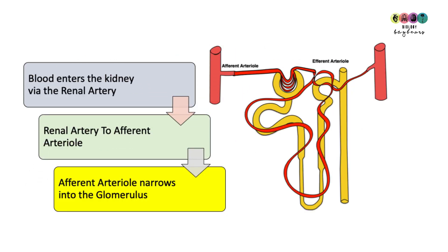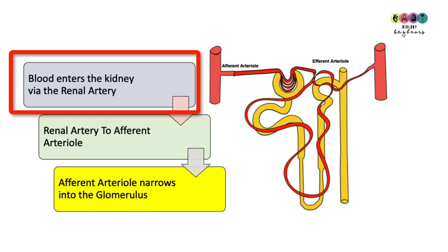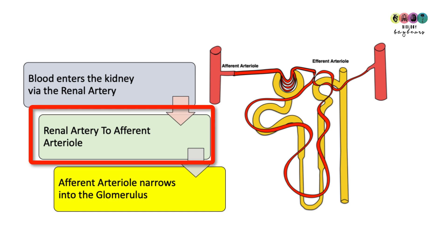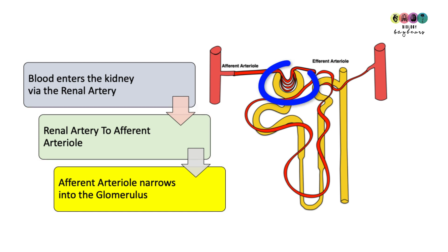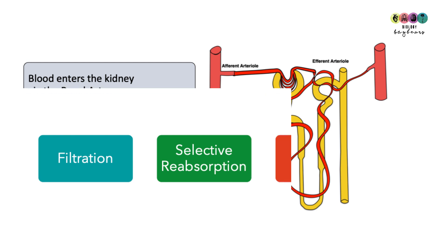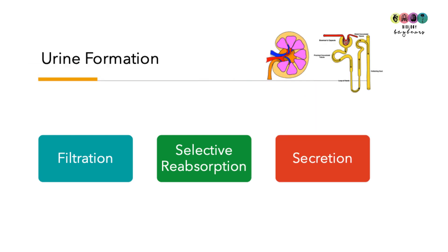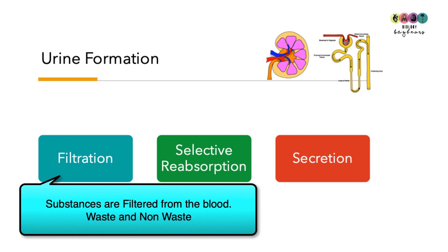Blood enters each kidney through the renal arteries, rich in waste. The renal arteries narrow eventually into the afferent arteriole, which narrows further into the glomerulus — and it is in the glomerulus that waste is filtered from the blood. Urine formation takes place in three stages. The first stage is filtration, where waste — but also useful materials — are forced out of the blood into the nephron.